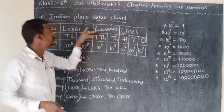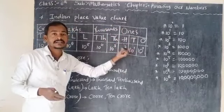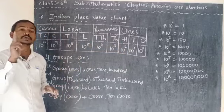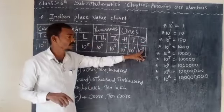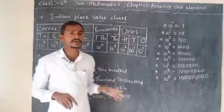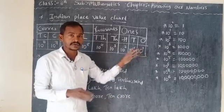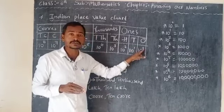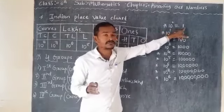This is the Indian place value chart. The first group has 3 places; the next 3 groups each have 2 places. Here, 1s means 10 raise to 0. So 10 raise to 0 means 1 — the power is 0, the base is 10, so in front of 1 there are no zeros.